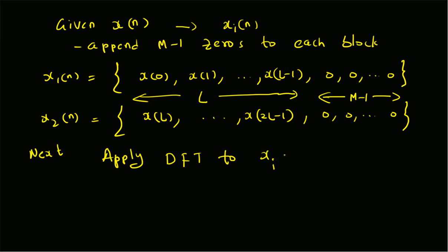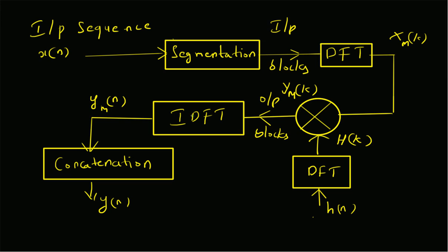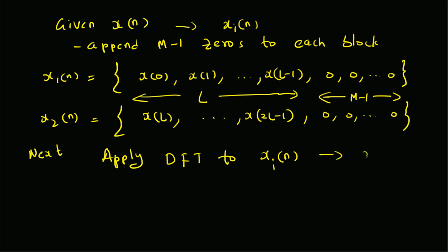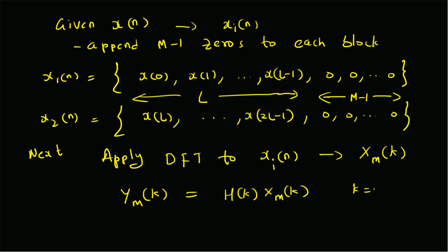We apply DFT to xi(n). If we go back to the block diagram for linear filtering of long data sequences, once we have the input blocks we apply DFT and get Xi(k). We also apply DFT to the impulse response of the filter and multiply that with Xm(k), so we get Ym(k) equal to H(k) — the frequency response of the filter — multiplied by the DFT sequence Xm(k), for values of k from zero to N minus one.